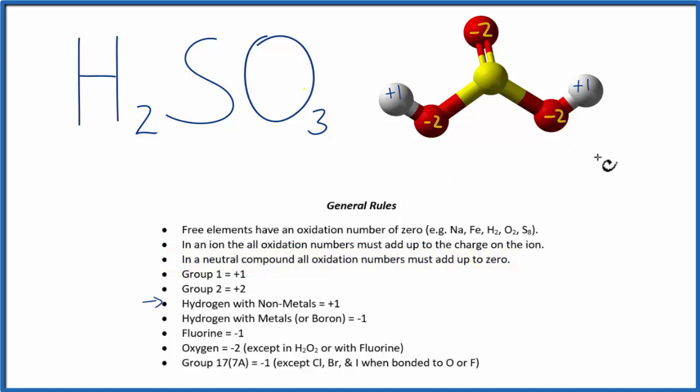So when we add all these numbers up, including the sulfur, it's going to equal zero. So you have plus one plus two plus minus two minus two minus two, that's a minus six, plus some number here is going to equal zero. So we can see that we need a four here for this to be equal to zero. That means the oxidation number on the central sulfur here is plus four.